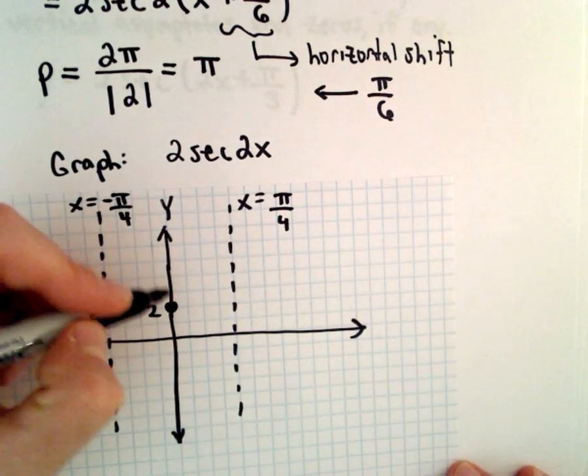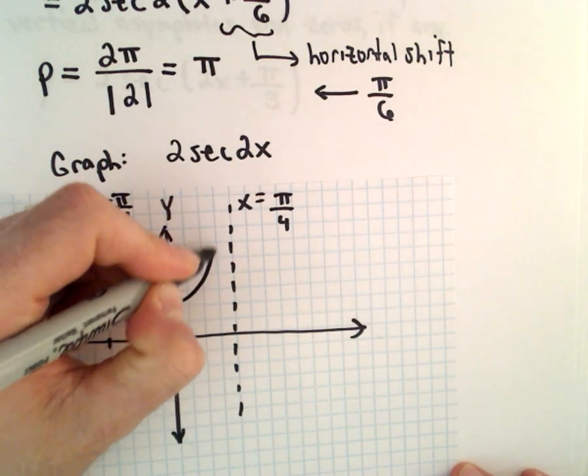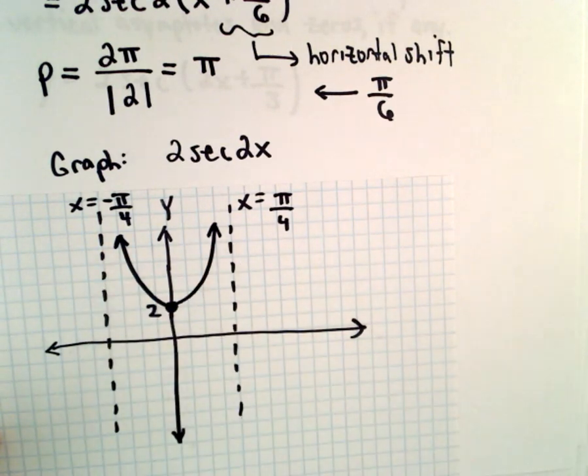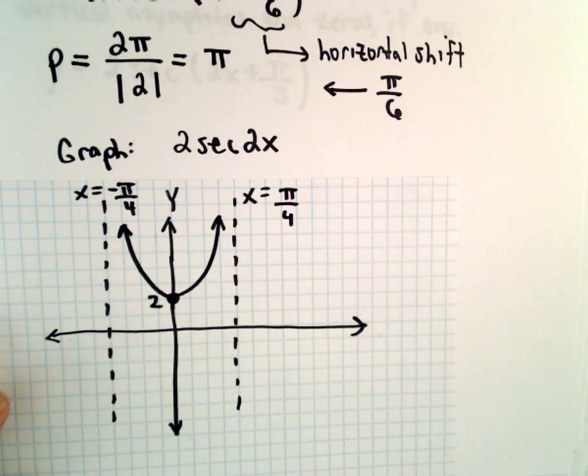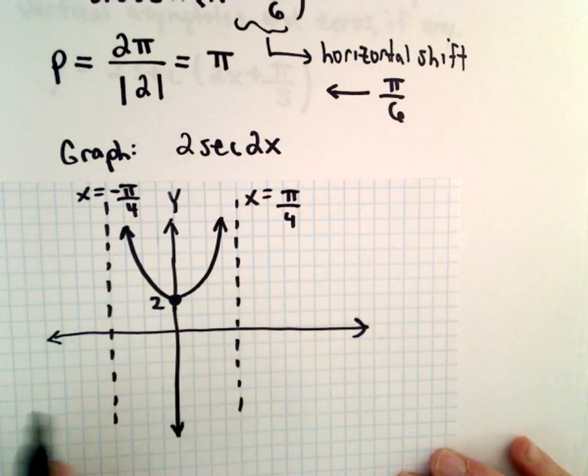There's y equals 2, and secant is just going to increase as you move to either side of the y-axis. Let's also go ahead and graph... So that's part of it. That's not a complete full period yet of 2 times secant 2x.